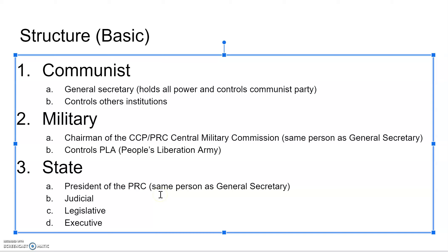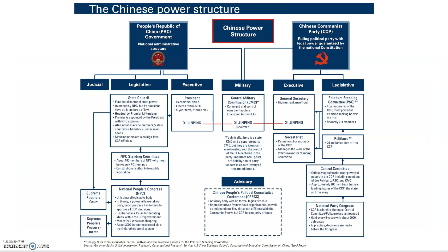In summary, the general secretary of the Communist Party is also the chairman of the military commission and is also the president of the PRC. Within the state, you have the judicial, legislative, and executive branches, just like in the U.S. The Chinese power structure is a good visual to understand where everything falls — you can go back and look at this slide, there's also a link on it.